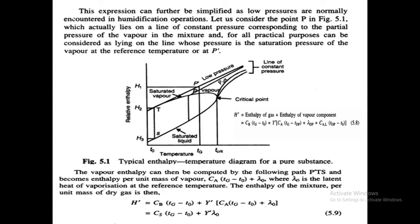This figure shows the enthalpy-temperature diagram for a pure substance. On the x-axis is temperature and on the y-axis is enthalpy. H1, H2, H3 are enthalpy values, Tg is the dry bulb temperature, T0 is the reference temperature, and T-critical is the maximum or critical temperature.